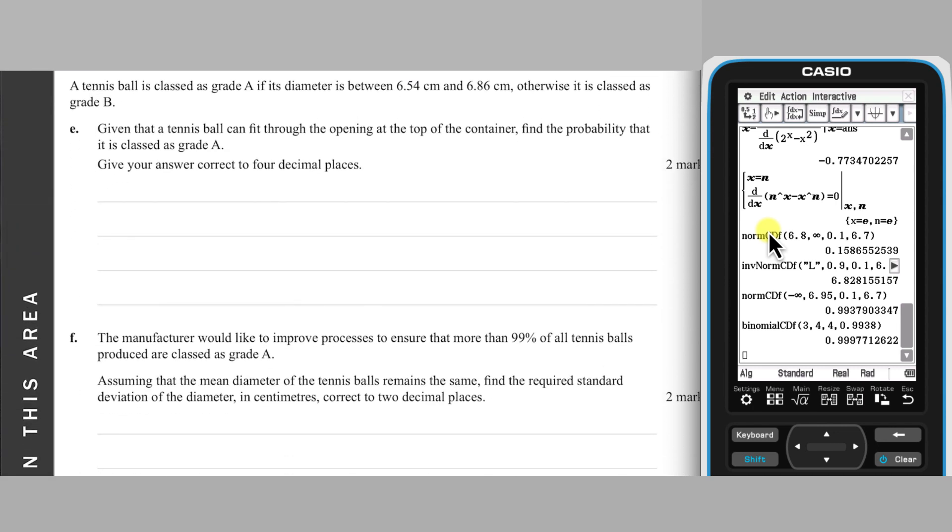In Part E, we need to find the probability that randomly chosen tennis balls are grade A, with a diameter between 6.54 and 6.86, given that they fit into a can, i.e. have a diameter of less than 6.95. This conditional probability can be calculated as the division of two norm CDF calculations, either done one at a time or as a fraction.